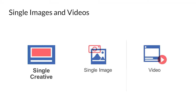In the single creative format, Facebook allows you to use a single image or a video. When using single images, Facebook prescribes that the amount of text on the image should not be more than 20% of the entire image size — if it's more than 20%, your ad might not reach the right audience. For videos, the best practice Facebook recommends is to build square videos with an aspect ratio of 1:1.